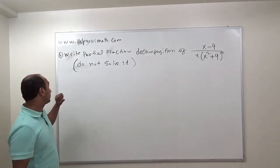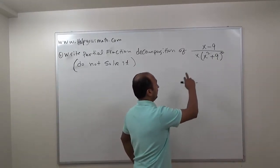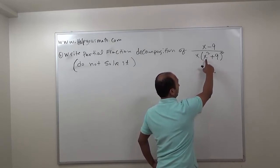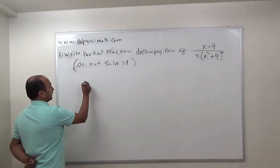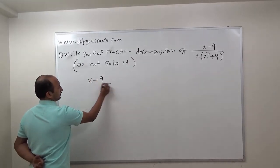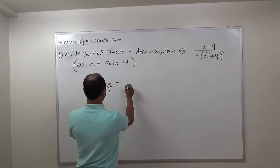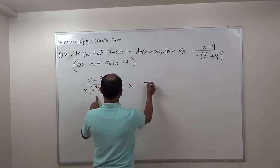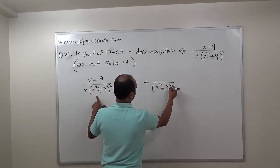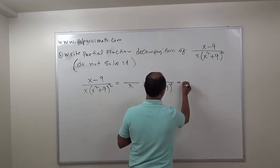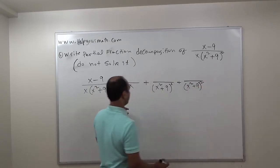Let's continue with Example 4. This problem says: write the partial fraction decomposition of (x minus 9) over x times (x squared plus 9) squared. We start with the expression (x minus 9) over x times (x squared plus 9) squared. We factor the denominator as x, then x squared plus 9 to the first power, then x squared plus 9 squared — those are the factors.